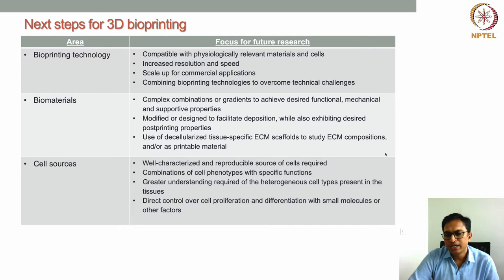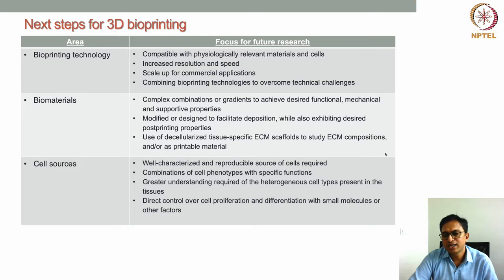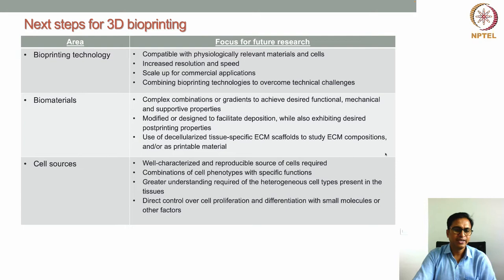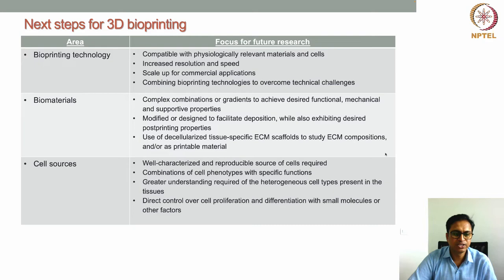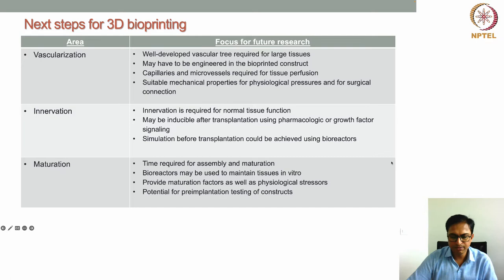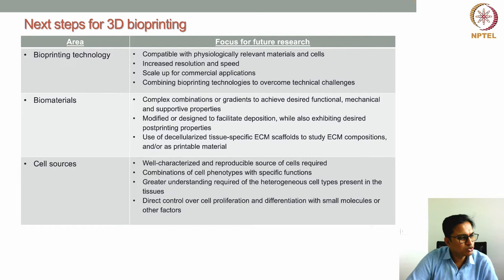Many of you are probably interested to work in this discipline and thinking about what is the best project or topic to work on. I can give a list of things that need to be developed further. I have listed these focus points into areas: bioprinting technology, biomaterials and cell source, and also vascularization, innervation, and maturation. We'll start with bioprinting technology first.